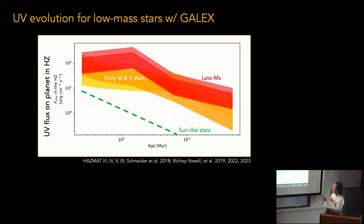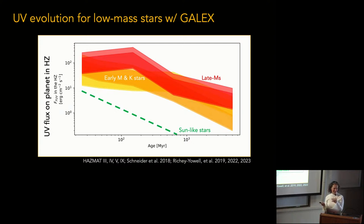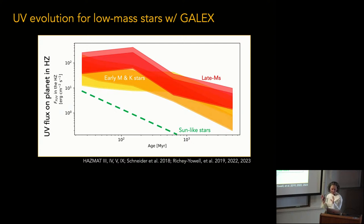What you might expect is that the late M's stay active for much longer — we kind of already knew that from X-ray, but now we have it numerically quantified in the far-UV and near-UV. The early M's and K stars are pretty close, so the UV flux at the habitable zone is roughly the same. For sun-like stars, we don't really have this data in the far-UV, so I've put it as a dashed line of where I expect it to be.